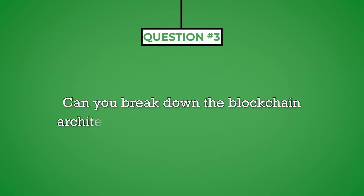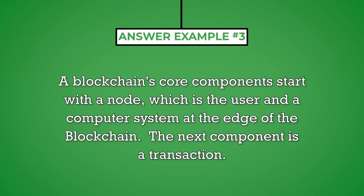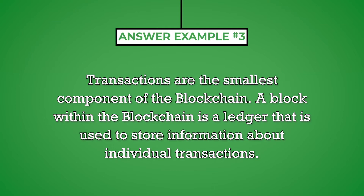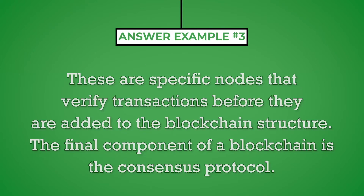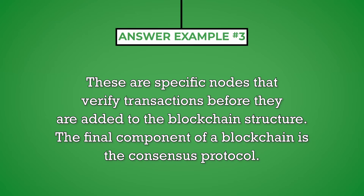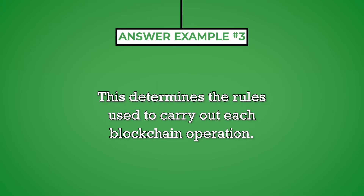Question number three: can you break down the blockchain architecture into its core components? The interviewer will repeatedly test your knowledge about blockchain throughout the interview, so it is best to brush up on core concepts before your interview begins. A blockchain's core components start with a node, which is the user and a computer system at the edge of the blockchain. The next component is a transaction — the smallest component of the blockchain. A block is a ledger used to store information about individual transactions, distributed across the network and maintained by each node. The chain is a sequence of blocks. Miners are specific nodes that verify transactions before they are added to the blockchain. The final component is a consensus protocol, which determines the roles used to carry out each blockchain operation.